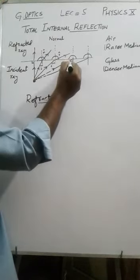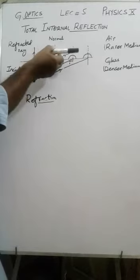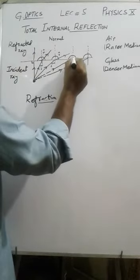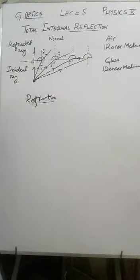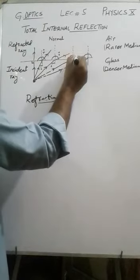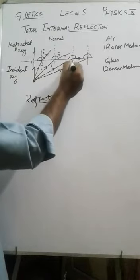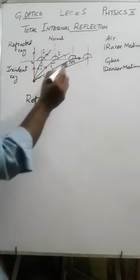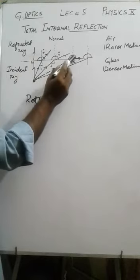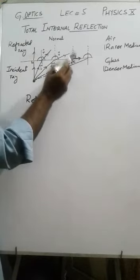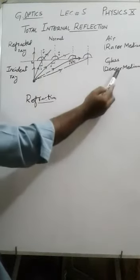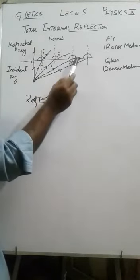A third ray shows the angle of incidence increasing further. The ray bending into air bends more and more until eventually the refracted ray lies along the surface and the angle becomes 90 degrees. This particular angle of incidence — for which the refracted ray bends through 90 degrees in the rarer medium — is known as the critical angle.